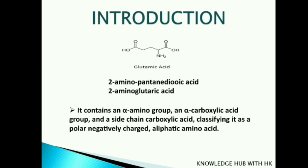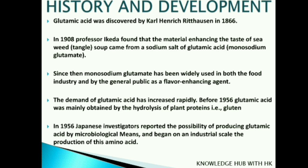Looking at the history, glutamic acid was first discovered and identified in the year 1866 by German chemist Karl Heinrich Ritthausen. In 1908, a Japanese researcher, Ikeda of Tokyo Imperial University, found that the material enhancing the taste of seaweed soup came from a sodium salt of glutamic acid — that is, monosodium glutamate. Since then, monosodium glutamate has been widely used in both the food industry and by the general public as a flavor-enhancing agent.